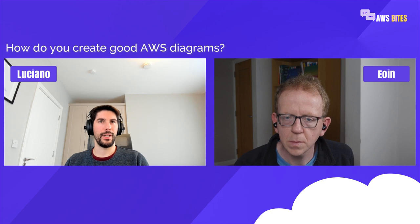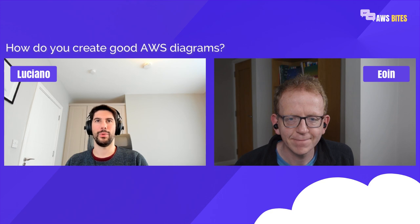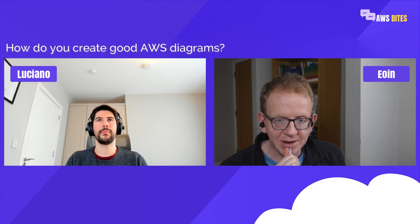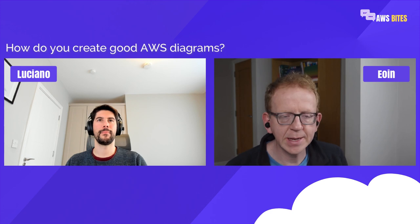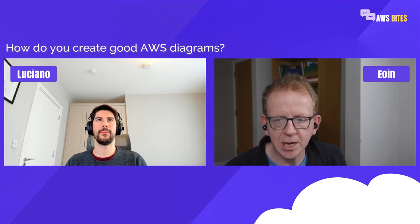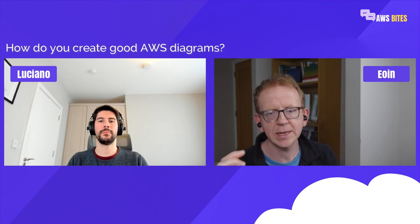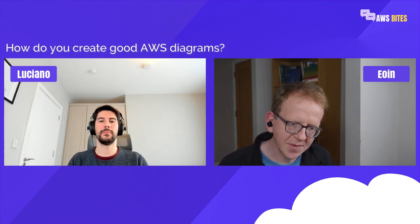The next category is generating diagrams from your infrastructure as code. The first tool is called CFN Diagram — it's for AWS and CloudFormation, hence the CFN. You need a CloudFormation template as the input, so if you're using Serverless Framework, CDK, CloudFormation, or SAM, you can use this.